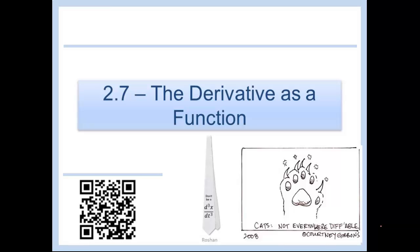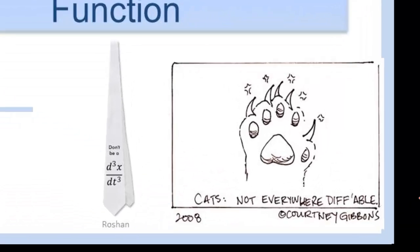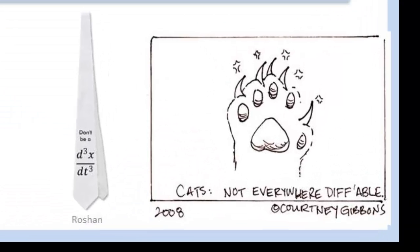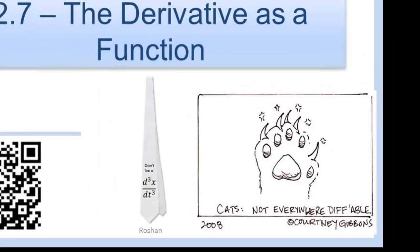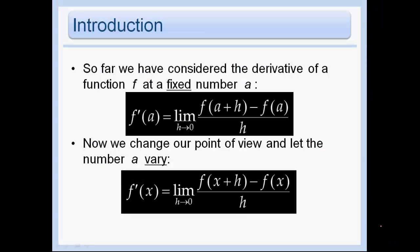The derivative as a function. So far we've looked at the definition of f prime of a as the limit as h approaches 0 of f of a plus h minus f of a, all over h.